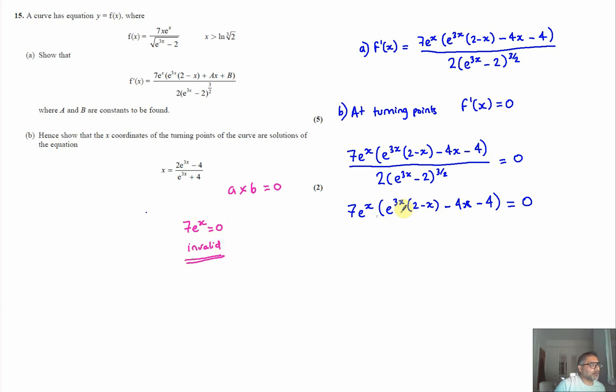that's not a correct answer. Or we can say that e to the three x times two minus x minus four times x minus four equal to zero. So from here, let's neaten that up and make x the subject because we want to write it in this format. So let's start off with expanding the brackets: two e to the three x minus x